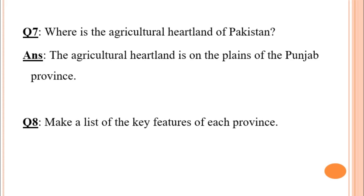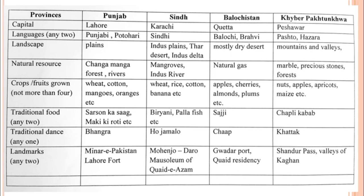Question number eight: make a list of the key features of each province. We have read about all four provinces of Pakistan — their landscape, famous landmarks, dances, food, and natural resources. We will make a table with the names of the provinces — Punjab, Sindh, Balochistan, and Khyber Pakhtunkhwa — covering features such as capital, languages, landscape, natural resources, crops or fruits grown, traditional food, traditional dance, and landmarks.